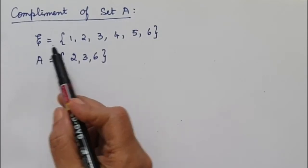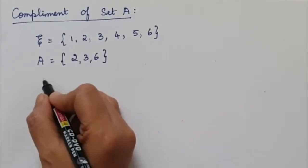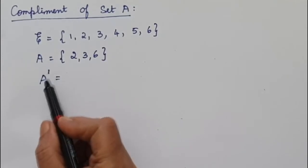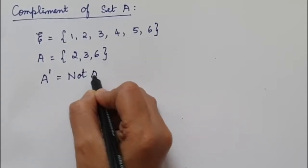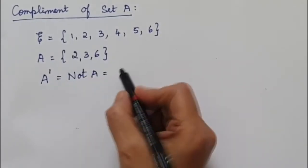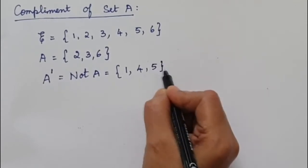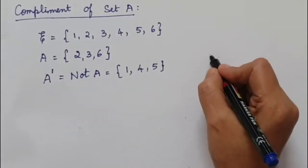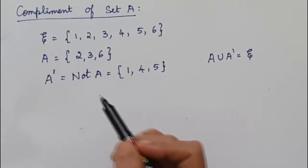Next is the complement of a set. Suppose you are given the universal set as {1, 2, 3, 4, 5, 6} and set A equals {2, 3, 6}. Then the complement of a set is represented by A′, read as A complement or complement of A. Complement of A is nothing but which is not in A — the elements present in the universal set but not in A. So 1 is not in A, 4 is not in A, and 5 is not in A. When we join A and A complement, we get the universal set: A ∪ A′ equals the universal set. A and A complement are opposite to each other.